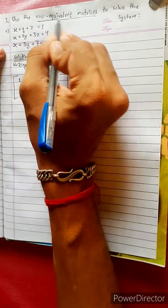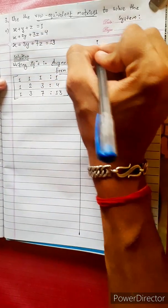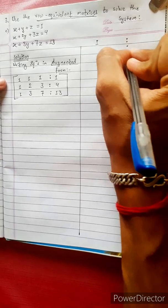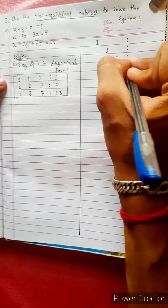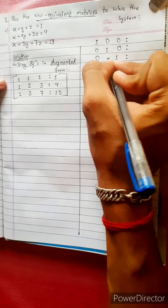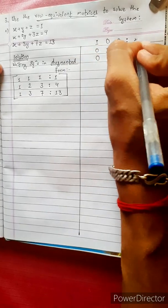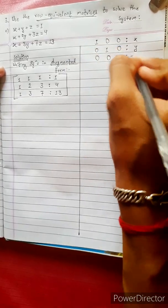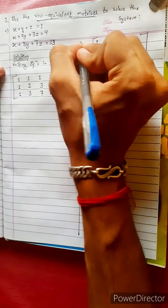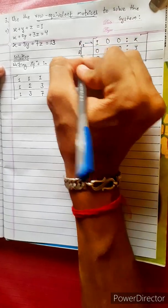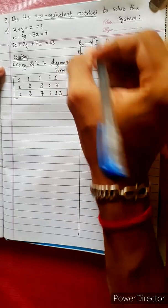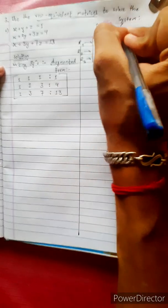Row Equivalent Matrices: the goal is to have the main diagonal equal to 1, and all other elements substituted by 0. Back to the terms X, Y, Z values. We label the 1st row, 2nd row, 1st column, and 2nd column.